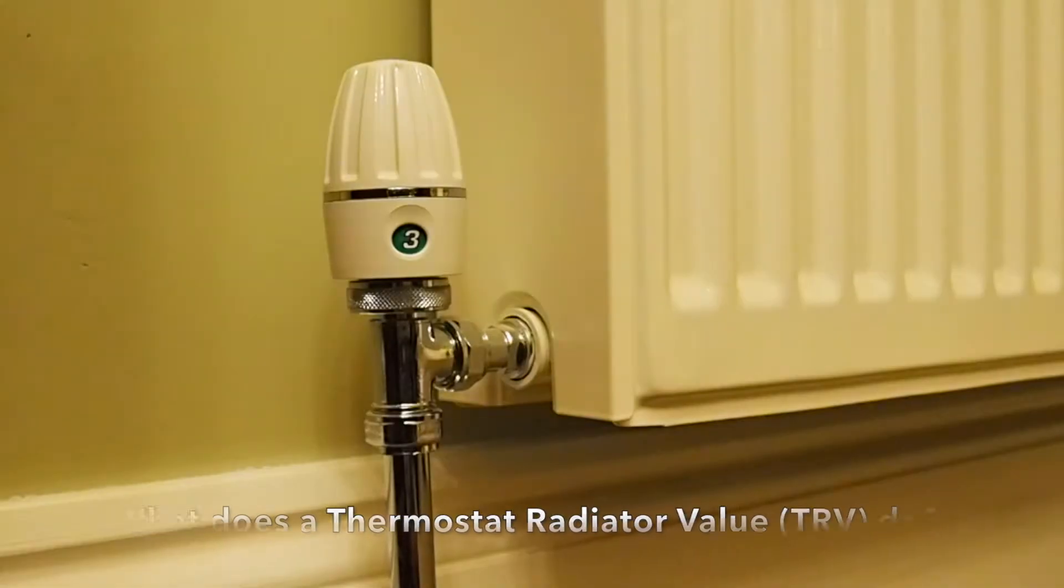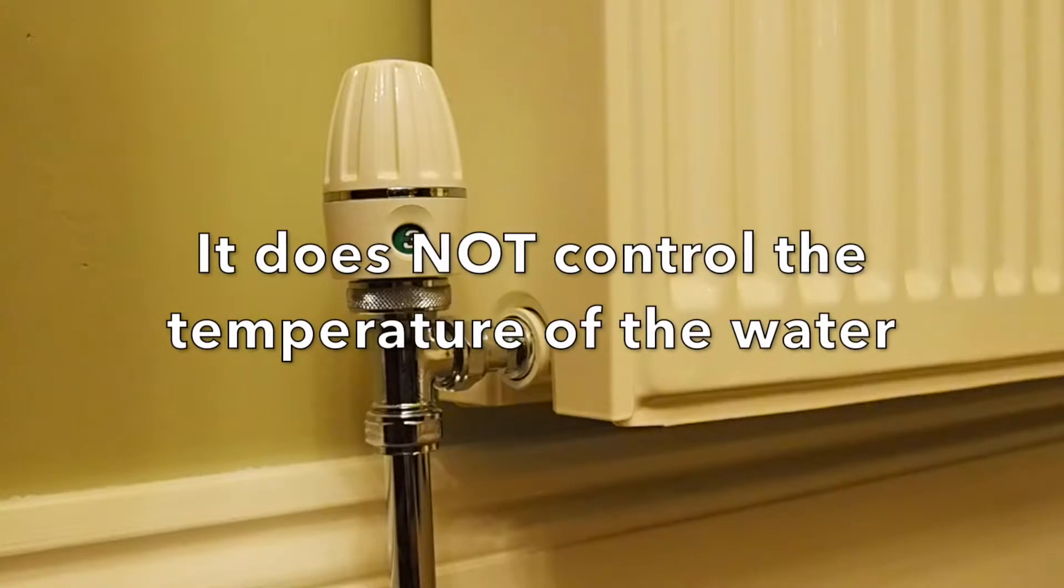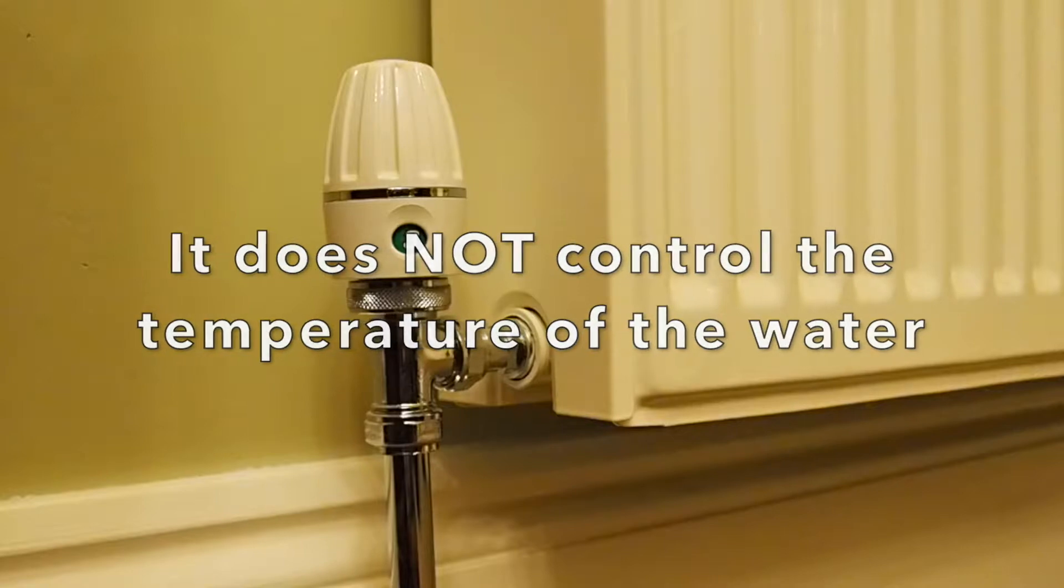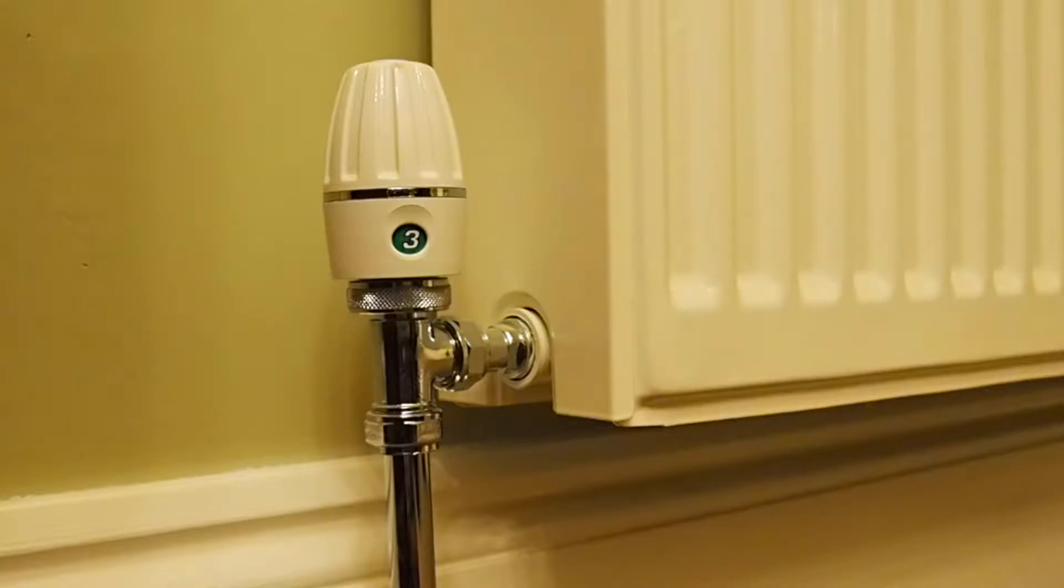A TRV controls the water flow rate to a radiator. When the room is too hot, the flow will be stopped. When it is too cold, the water will be allowed to flow. It does not control the temperature of the water going into the radiator. This is very important, as this video will now show.